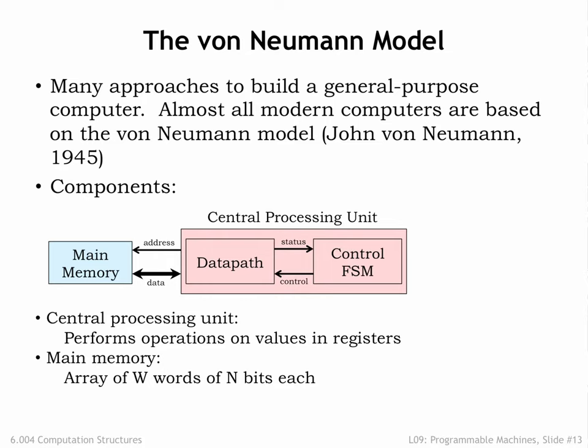You can think of it as an array. When the CPU wishes to operate on values in memory, it sends the memory an array index, which we call the address. And after a short delay, the memory will return the N-bit value stored at that address. Writes to main memory follow the same protocol, except, of course, the data flows in the opposite direction. We'll talk about memory technologies a couple of lectures from now.